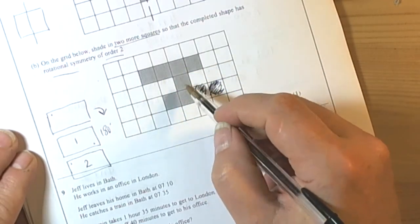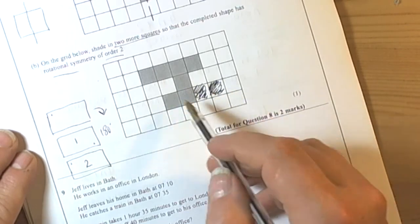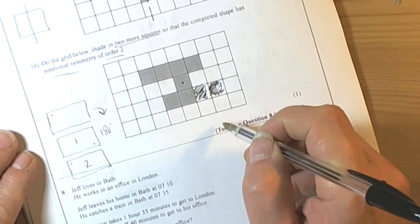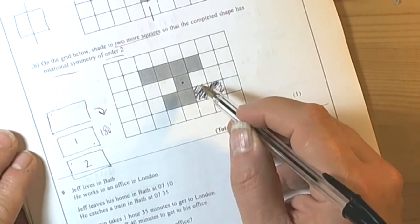We should of course use tracing paper to check our answer. So if we put the tracing paper over and put our pen point down there, then we should find it spins, looks the same upside down, and then looks the same back where it was.